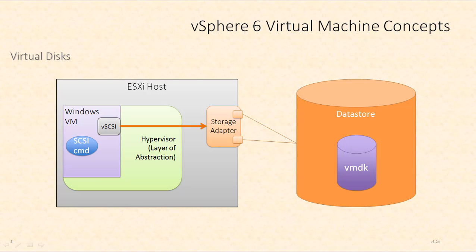From there, the storage commands hit our ESXi host — they hit our hypervisor — and they're redirected towards the appropriate VMDK for this virtual machine. Here we see a SCSI command flowing out of the Windows virtual machine, hitting the storage adapter and arriving at the data store.